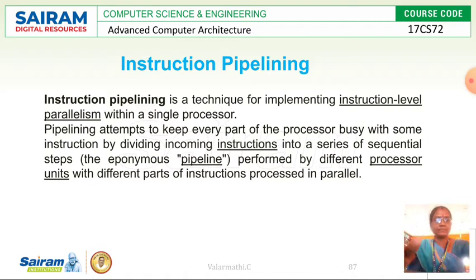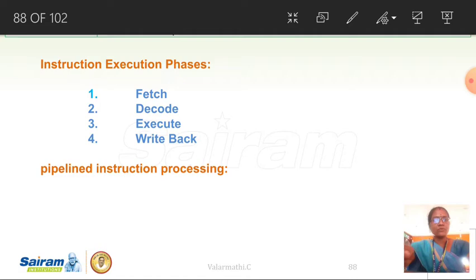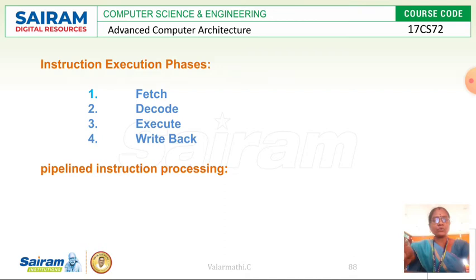We know the meaning of instruction execution phases. There are four important instruction execution phases: the first is fetch, the second is decode, the third is execute, and the fourth is write back. Now we are going to see how instruction pipelining processing looks.